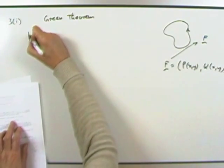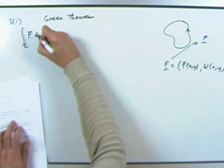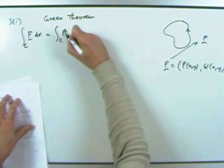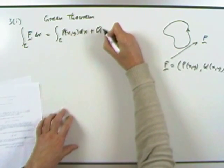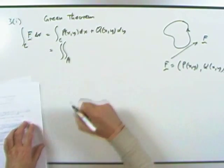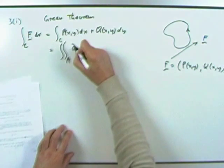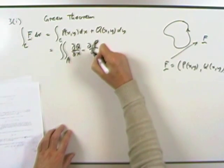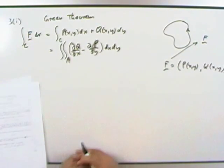then it says the line integral over the whole curve of F dot dR — which means the line integral over the whole curve of P(x,y) dx plus Q(x,y) dy — is the same as the area integral throughout the area enclosed by the curve of (∂Q/∂x minus ∂P/∂y) dA, or dx dy. That would be Green's Theorem.